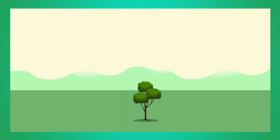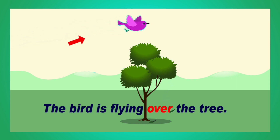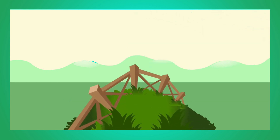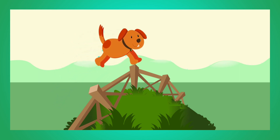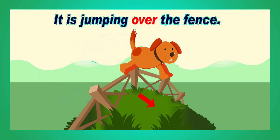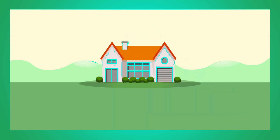In this picture there is a tree and a bird. The bird is flying over the tree. Look at this picture — the dog is jumping. Where is it jumping? It is jumping over the fence.